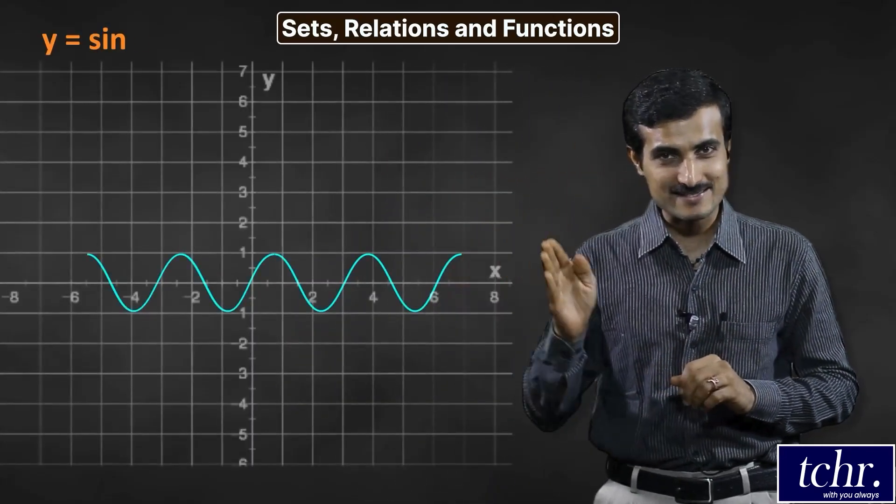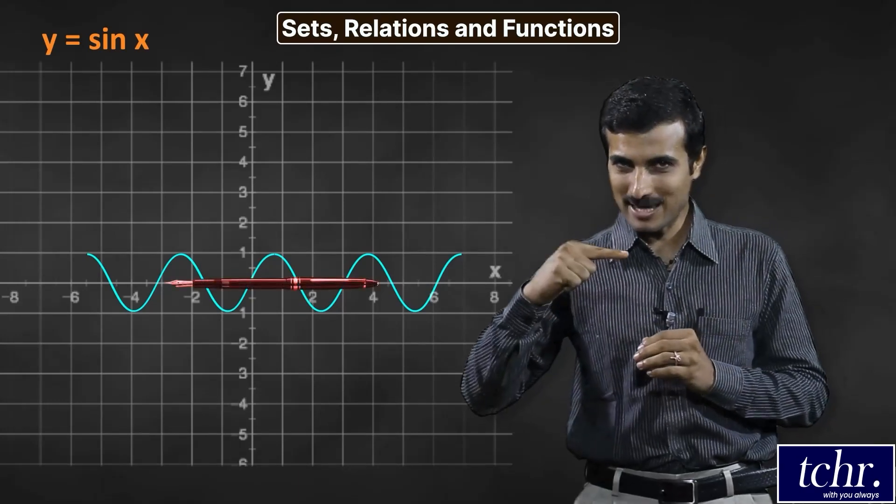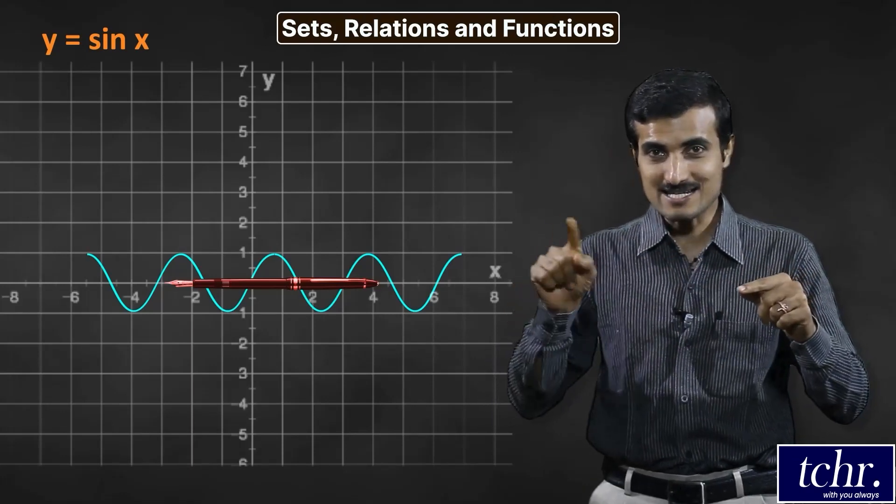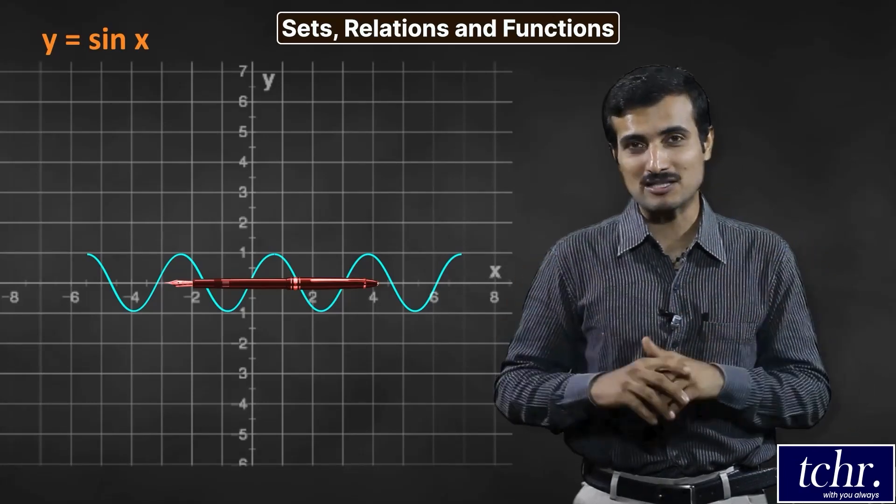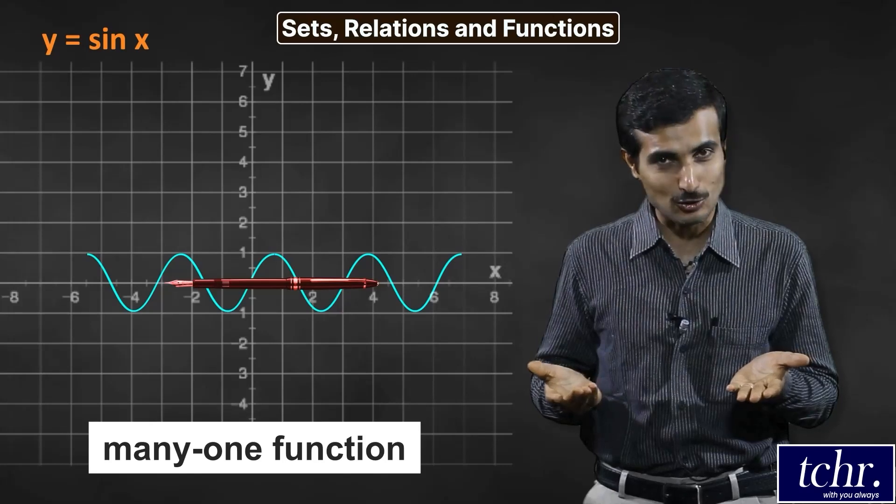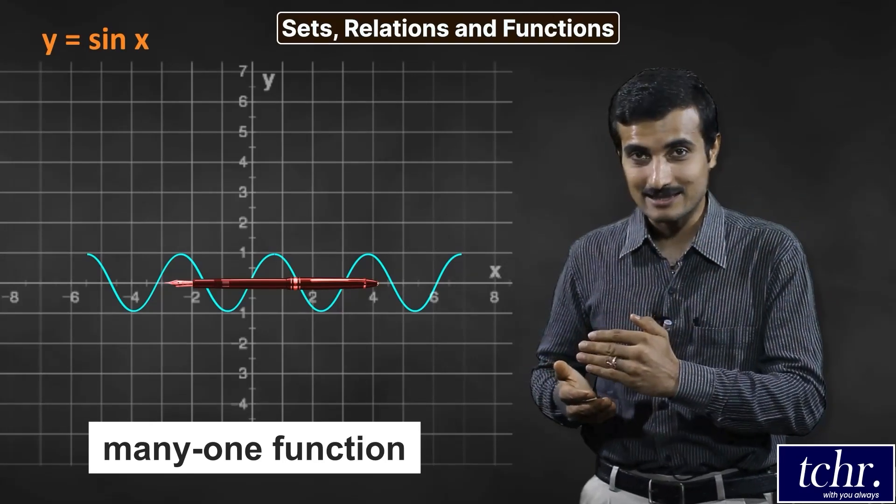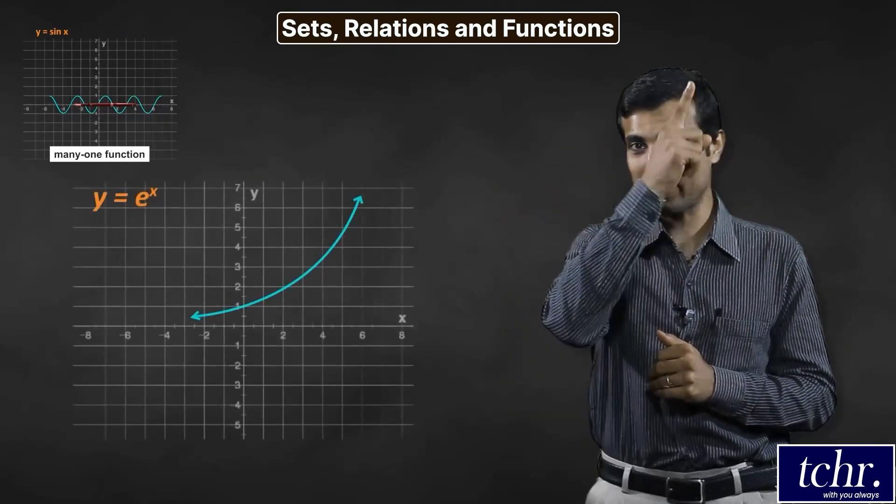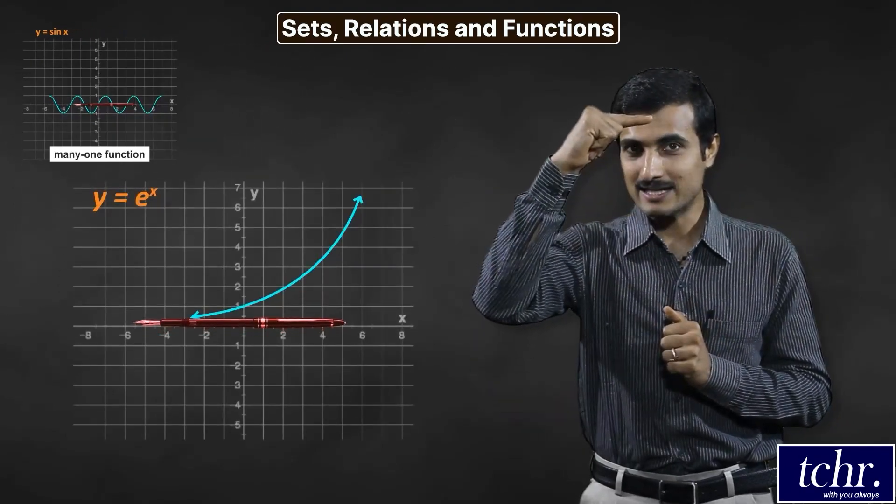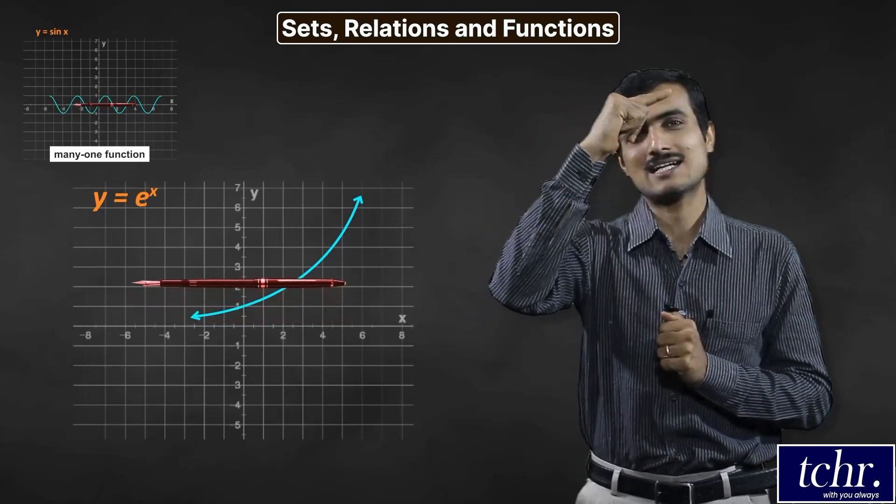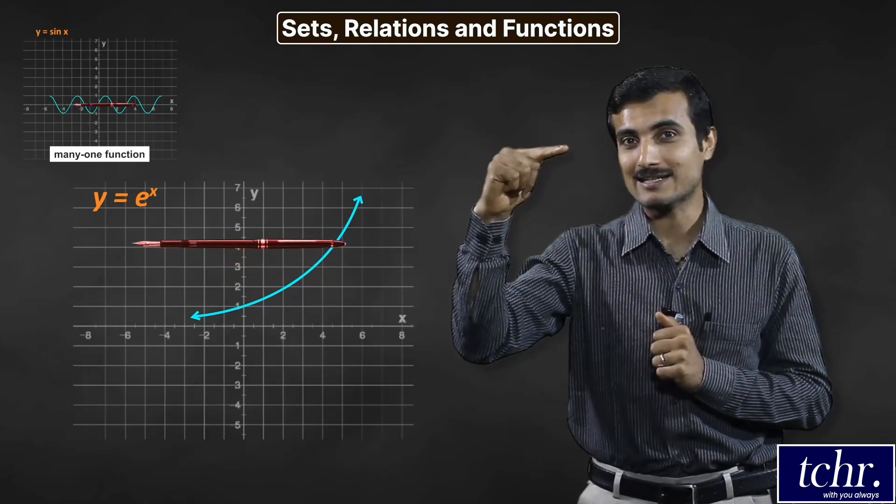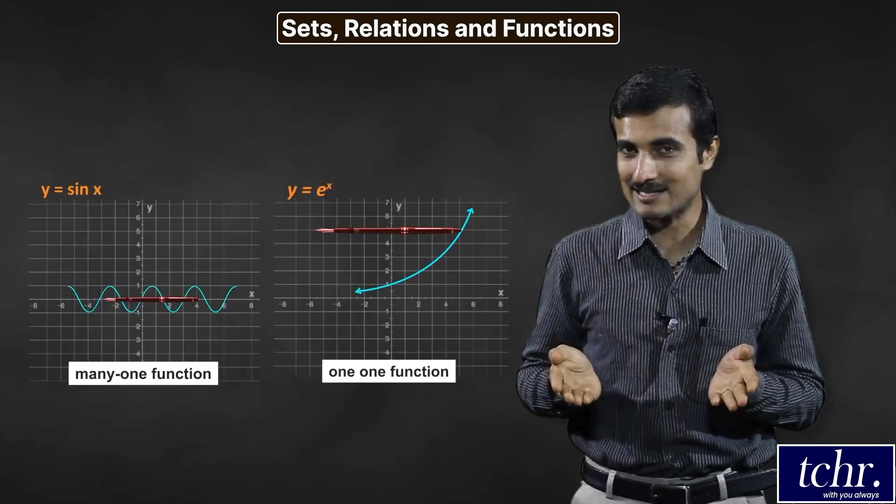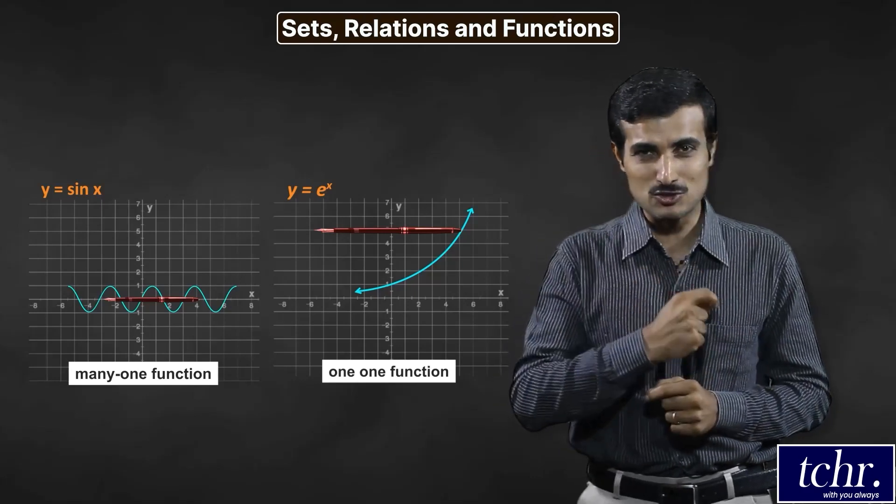Example, y equals sin x. Look at this function, you have a pen. Horizontal line test. If it cuts at only one point, then the conclusion is it is a one-one function. You are keeping the pen horizontally. If you move here, y equals e power x - one-one function. Y equals sin x - many-one function. You have a pen to make a decision.